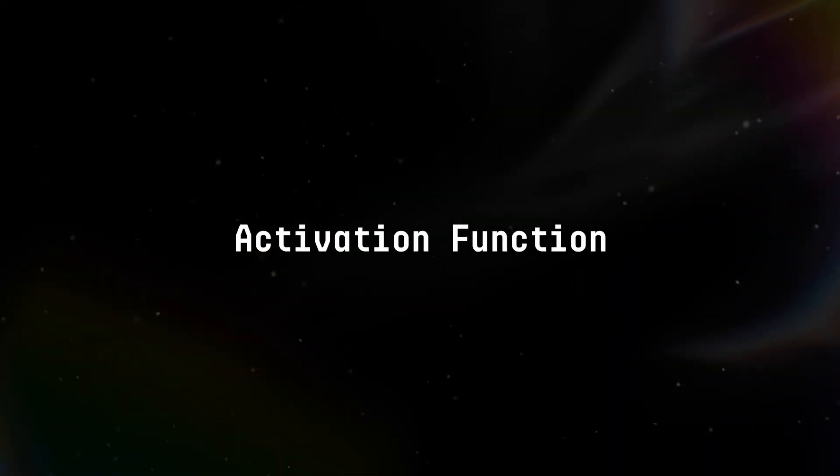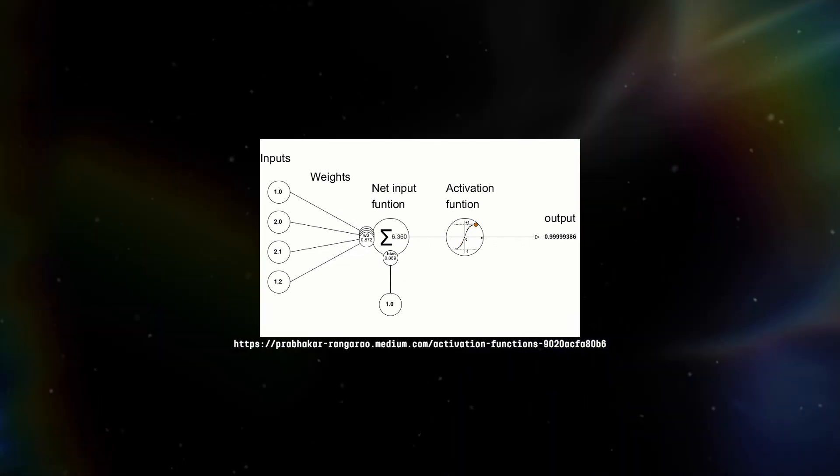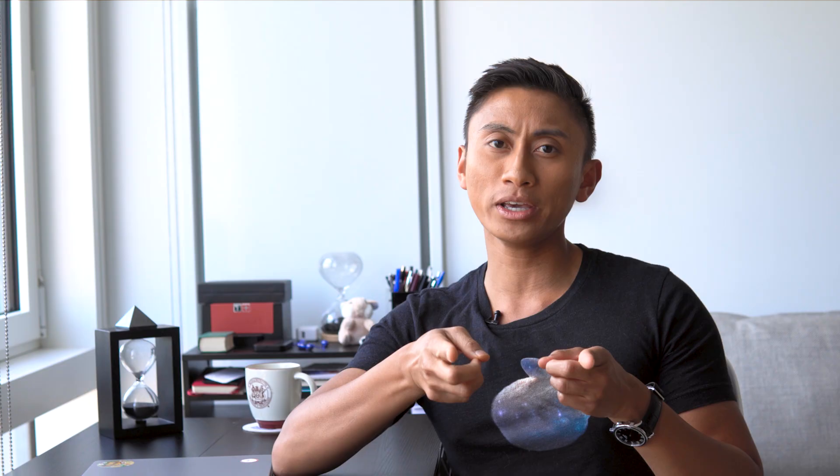But here's the frothy twist. There's a special barista known as the activation function, who decides how each ingredient is added. This barista ensures the balance is just right — not too strong or too mild — making sure that your coffee experience is consistently magical. And after you take that first sip? The feedback you give is like the backpropagation in the network, helping our barista team tweak their techniques for your next visit. So the next time you think of a multilayer neural network, imagine the bustling AI Starbucks, where every cup is a blend of precision, art, and a dash of digital magic.